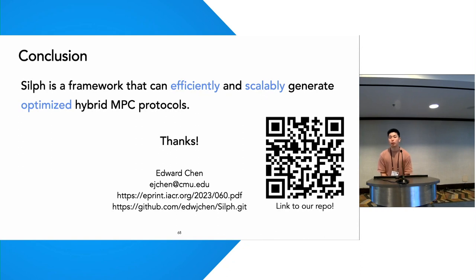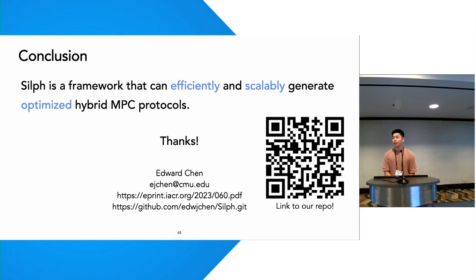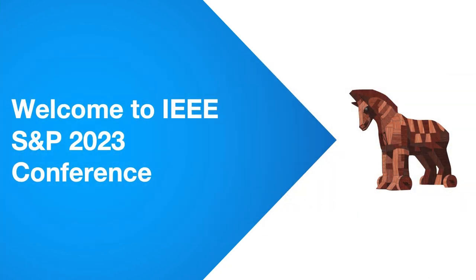Q: There are special garbled circuits specifically for branching programs that optimize how much you need to unroll — are those supported in your system as well, or just generic garbled circuits? A: We're currently targeting just generic garbled circuits via the ABY framework, but we would like to support those in the future as well. Let's thank the speaker and all other speakers in the session.